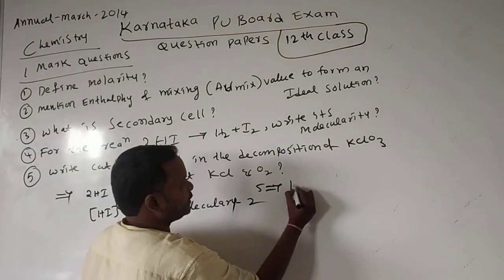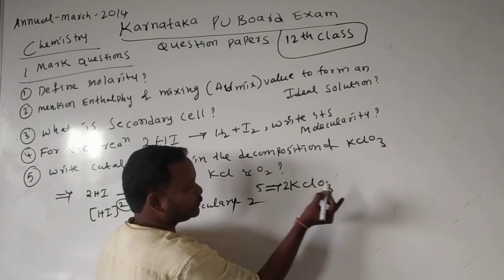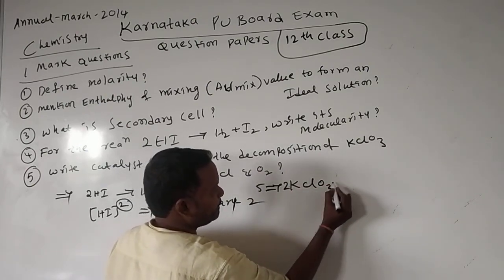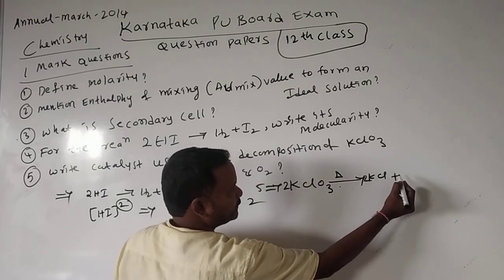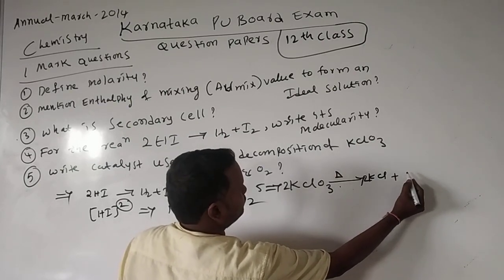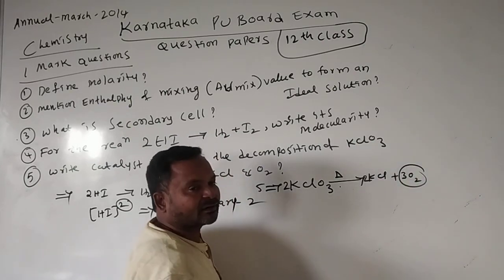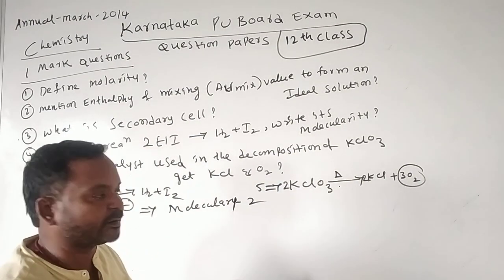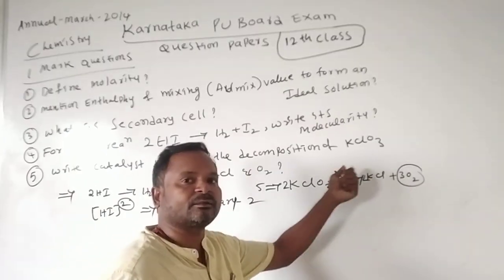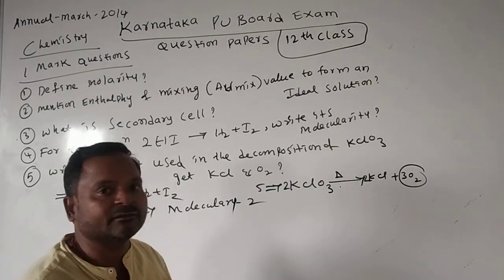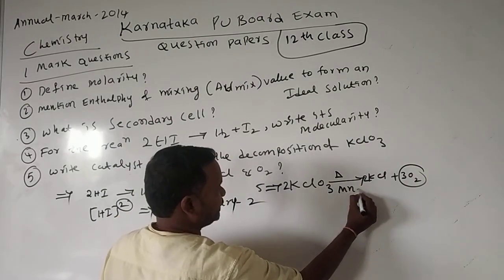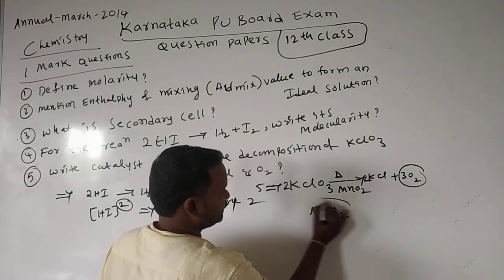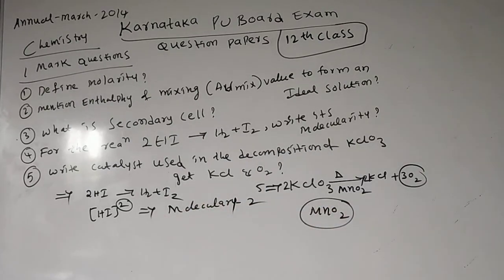Fifth question: decomposition of KClO3. When you take two moles of KClO3 and apply heat, we get KCl plus three moles of oxygen. This is one of the important reactions — KClO3 was first used to prepare oxygen using this reaction. KClO3 is called potassium chlorate. MnO2 (manganese dioxide) is used as a catalyst in this reaction.